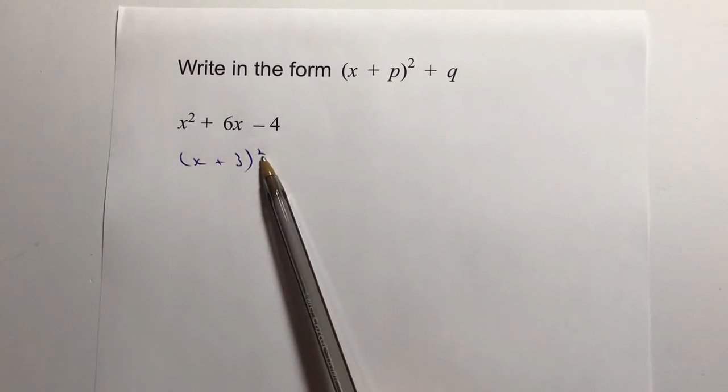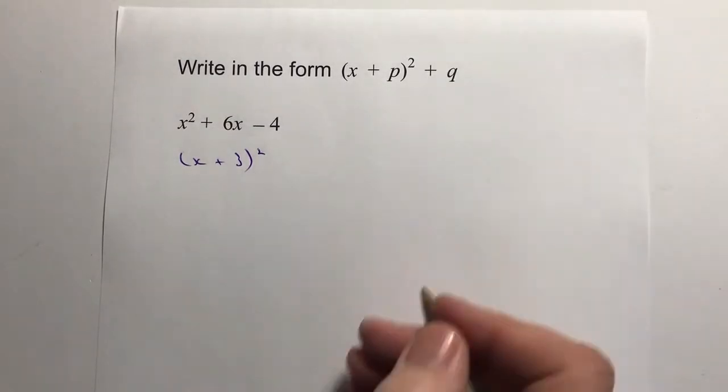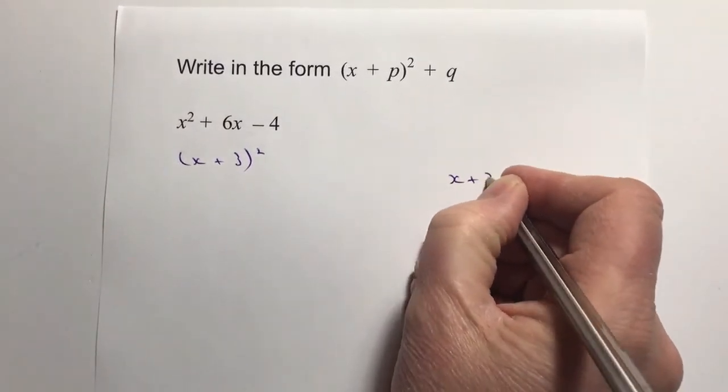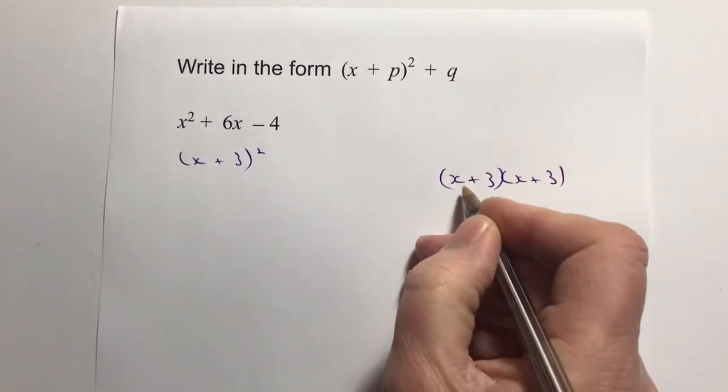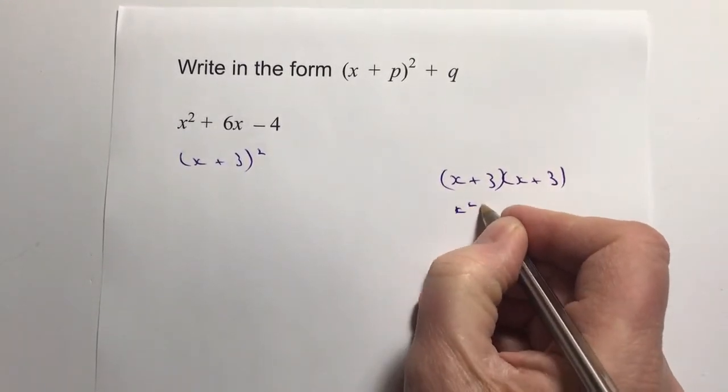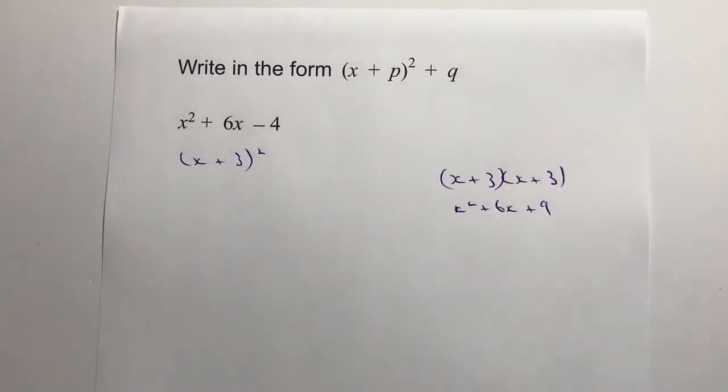So at the moment we've got that. Now if I actually work that out, I'm going to end up with x plus 3 times x plus 3, and that's going to give me x squared plus 6x plus 9.